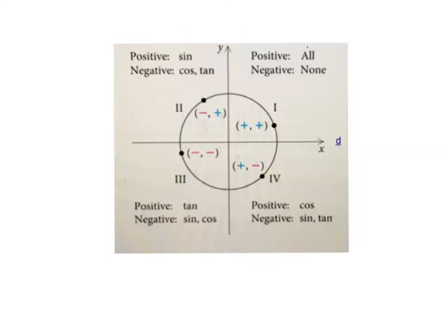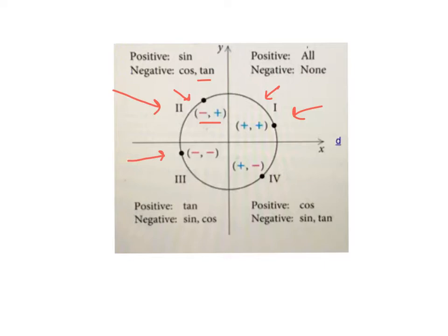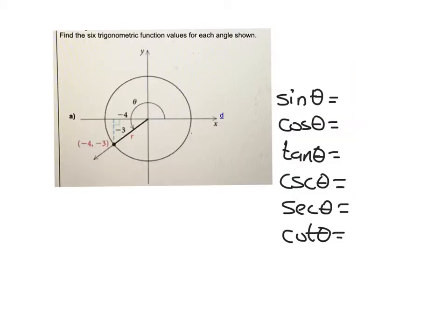Quick reminder: cosine is x and sine is y. In quadrant 1, everything is positive — x is positive so cosine is positive, y is positive so sine is positive. In quadrant 2, points are negative-positive: cosine is negative, sine is positive. Tangent is y over x — if the signs are different, tangent is negative. In quadrant 3, both are negative: cosine is negative, sine is negative, but tangent is positive because negative divided by negative is positive. In quadrant 4, cosine is positive, sine is negative, and tangent is negative because the signs are different.